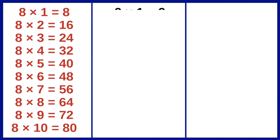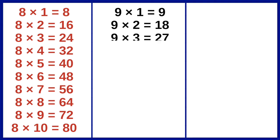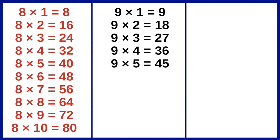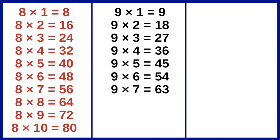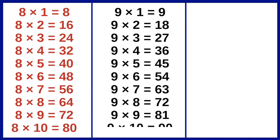9 1s are 9, 9 2s are 18, 9 3s are 27, 9 4s are 36, 9 5s are 45, 9 6s are 54, 9 7s are 63, 9 8s are 72, 9 9s are 81, 9 10s are 90.